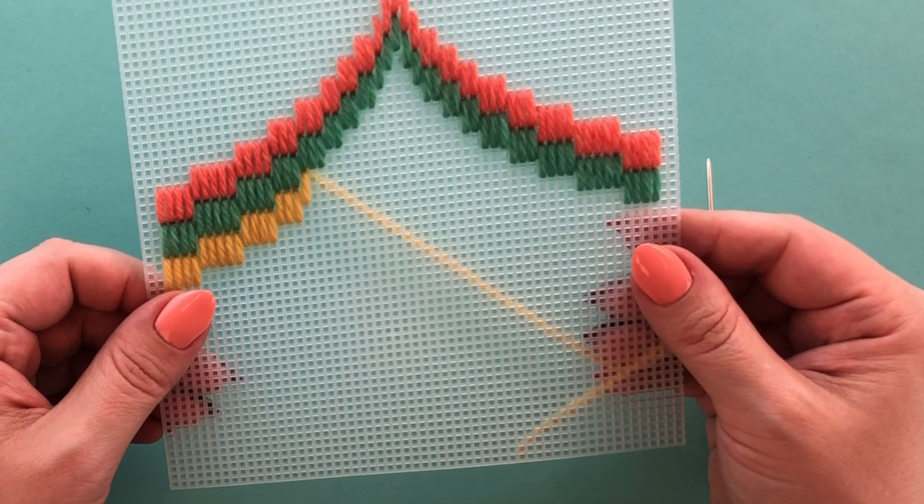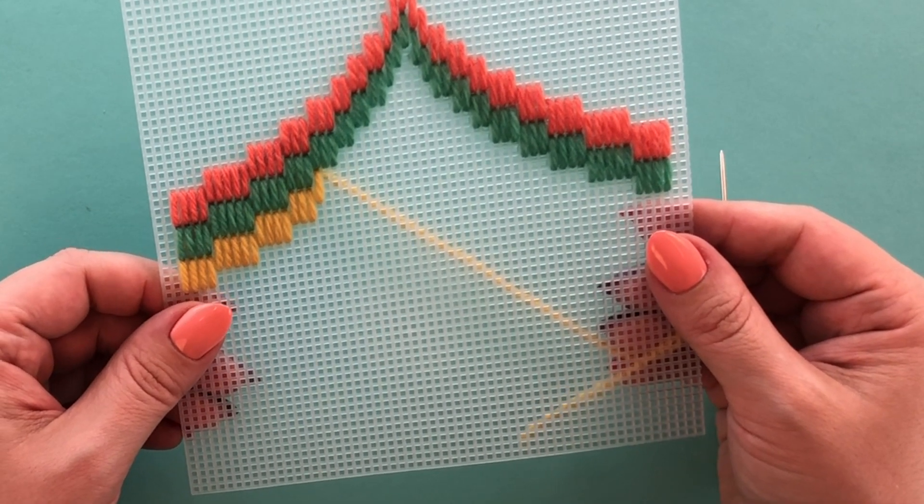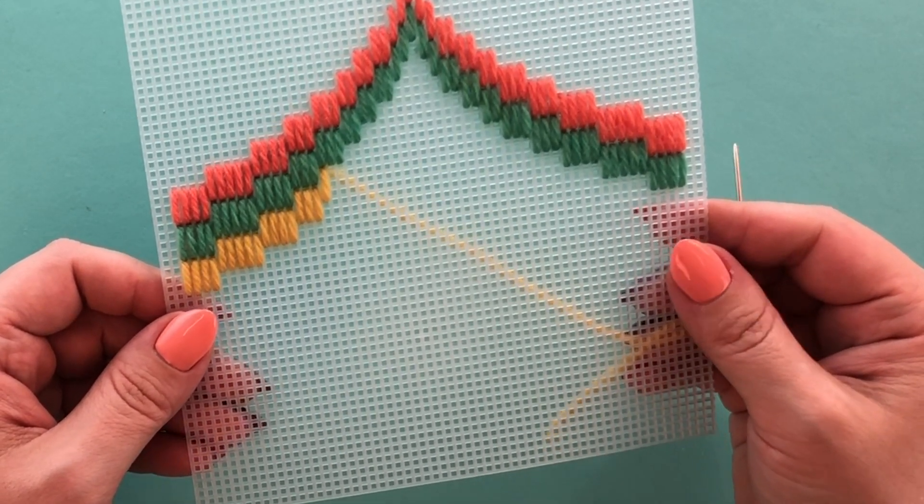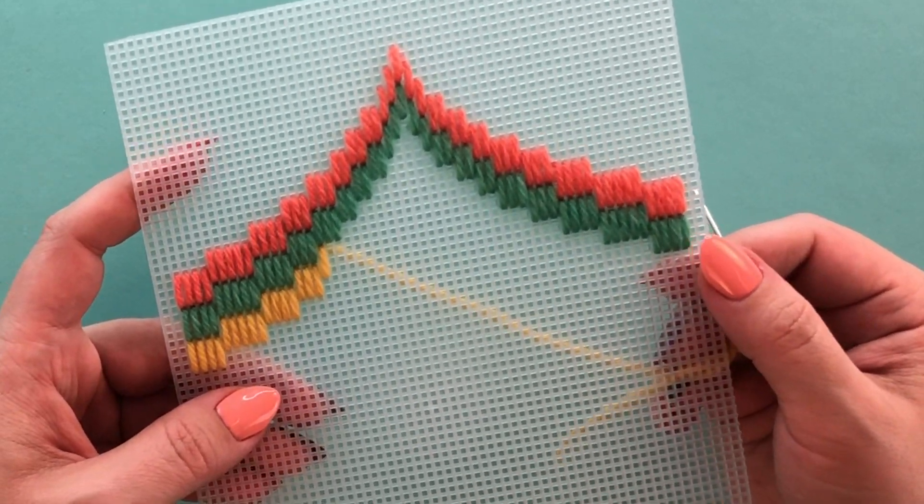In this video we'll learn how to correct mistakes if you make a mistake while you're stitching. There are three basic ways that you can correct mistakes.